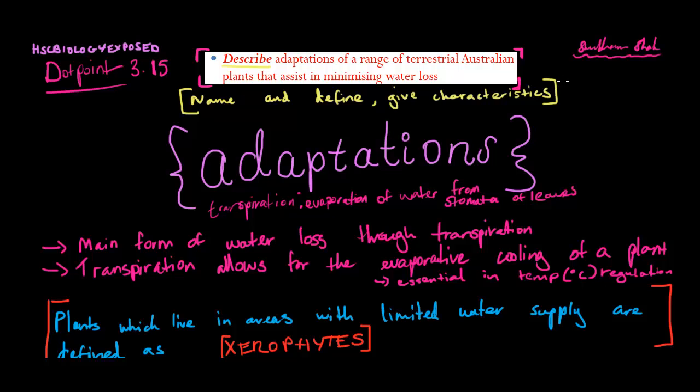We've got adaptations, which is the key word inside this dot point. Now adaptations is anything that's actually allowed for the organism to survive over a long period of time, which differentiates it from other organisms. Adaptations are actually very common in these plants, and we can really easily tell that these adaptations have allowed these plants to survive.